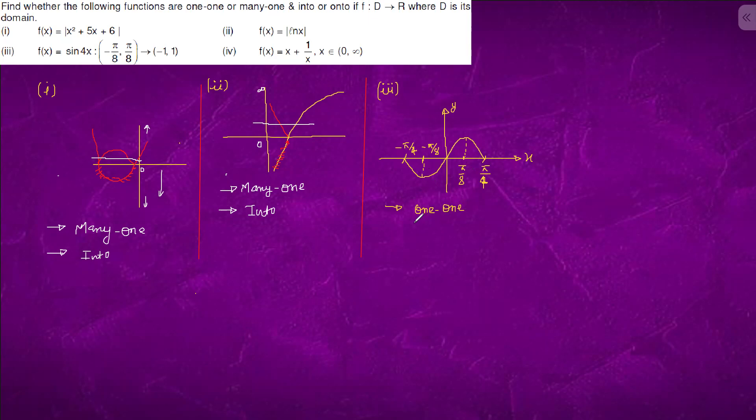And we are given that range is from minus 1 to infinity, minus 1 to 1. So this is always, this is correct. So this is onto.